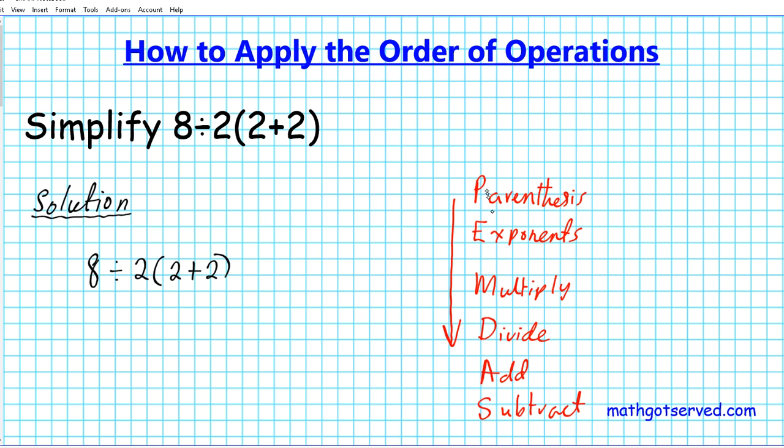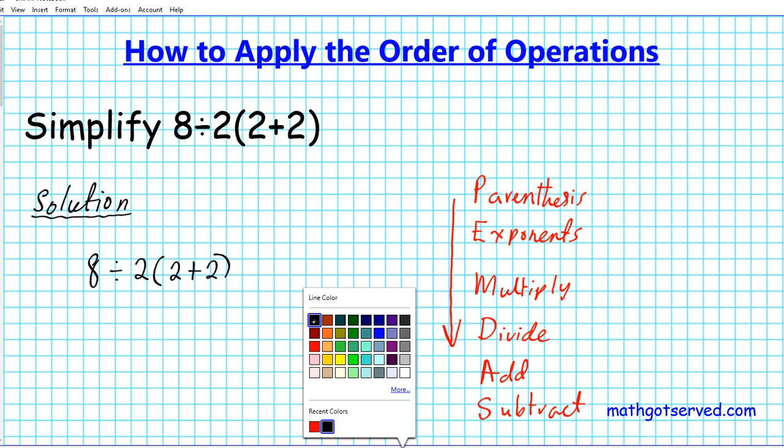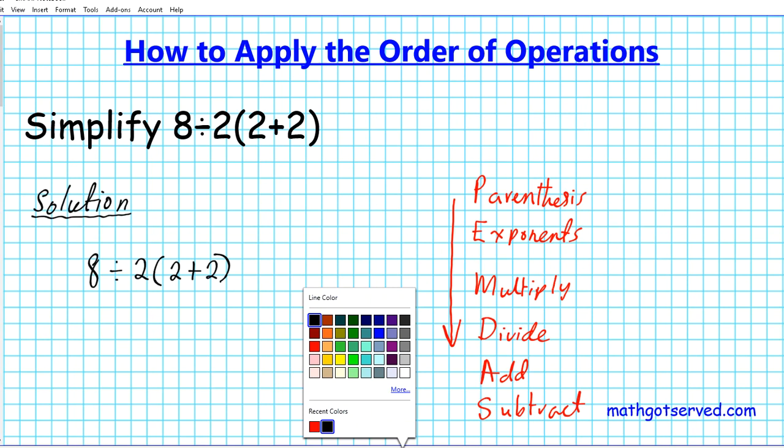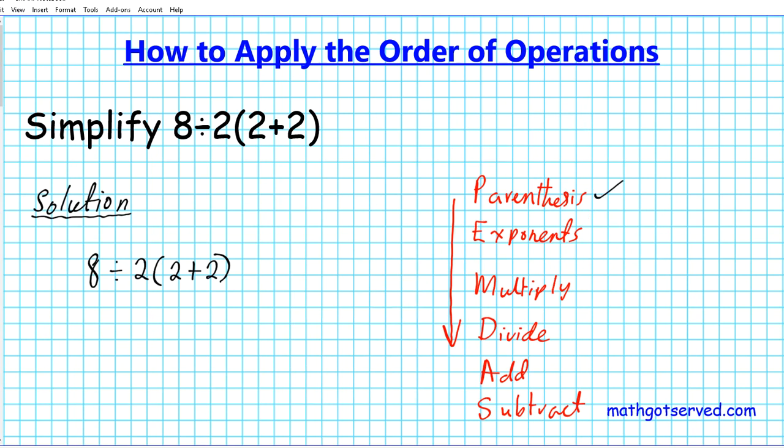We have 8 divided by 2 times the quantity 2 plus 2. So what are we going to do first here for the order of operations? We notice we have a parentheses. So what that basically tells us is that we're going to do the operation in the parentheses first.